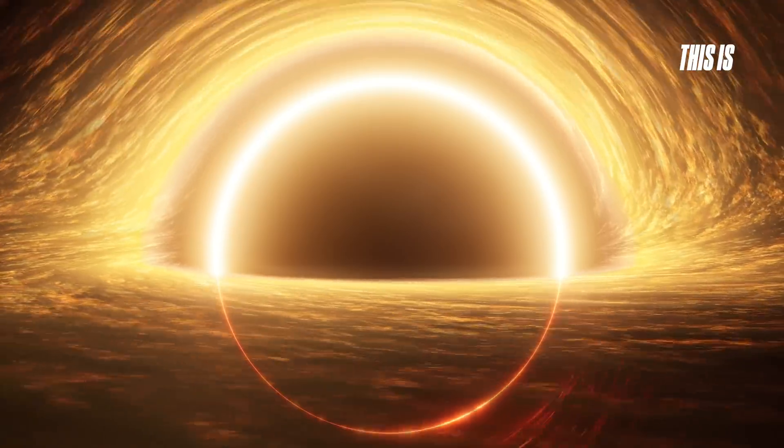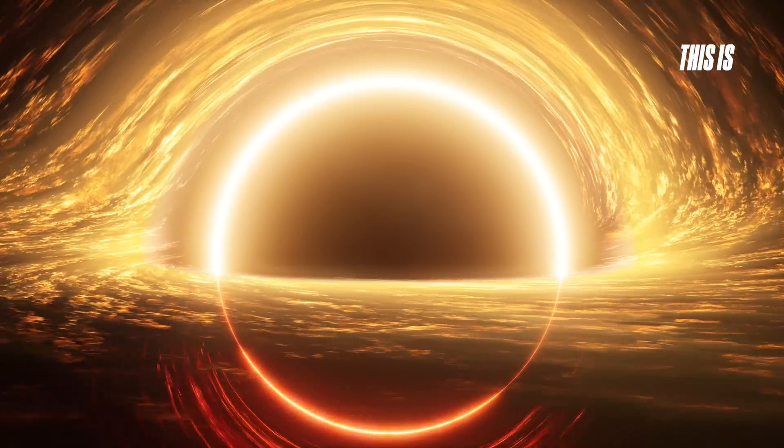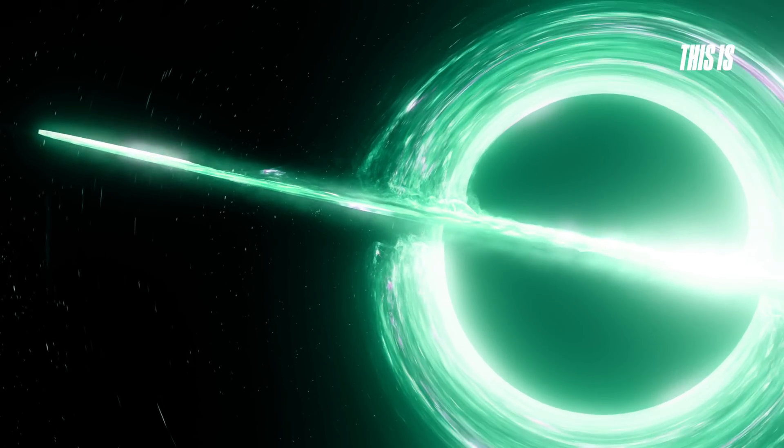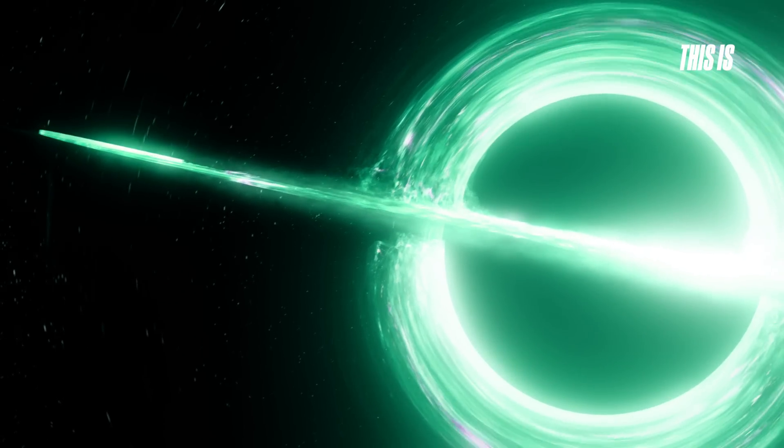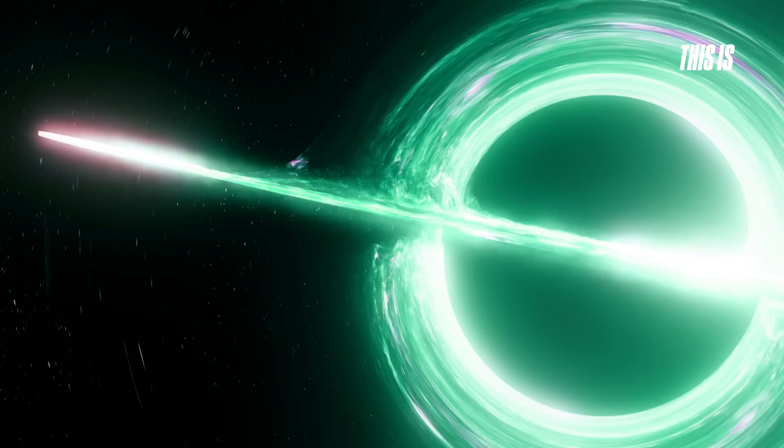This is a swirling disk of gas, dust and stars spiraling toward the black hole. Friction between particles heats the matter to extreme temperatures, causing it to glow across different wavelengths, from visible light to X-rays.